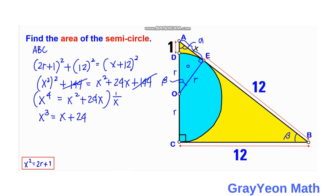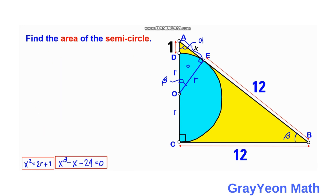Dividing through by X and rearranging, we bring everything to the left-hand side: X³ - X - 24 = 0. We just need to solve this resulting cubic equation.